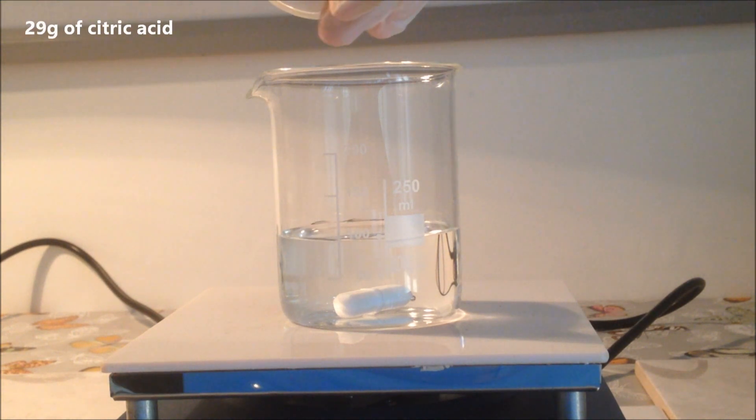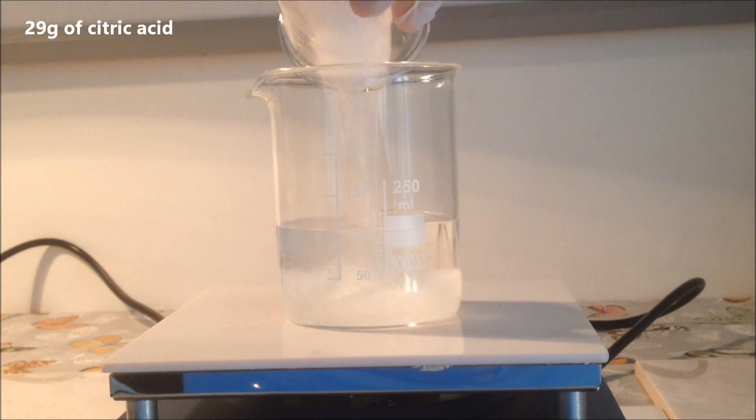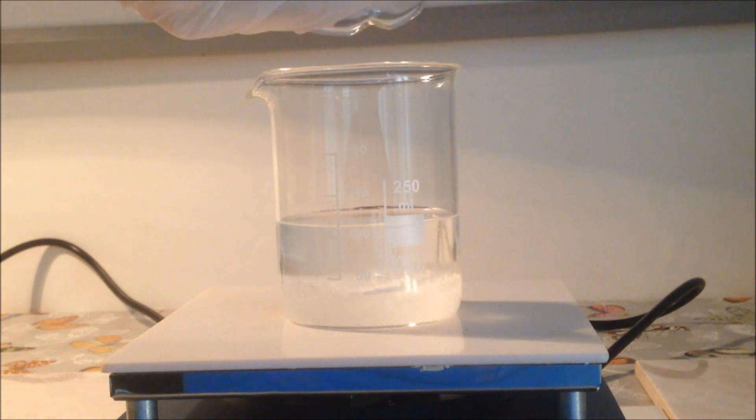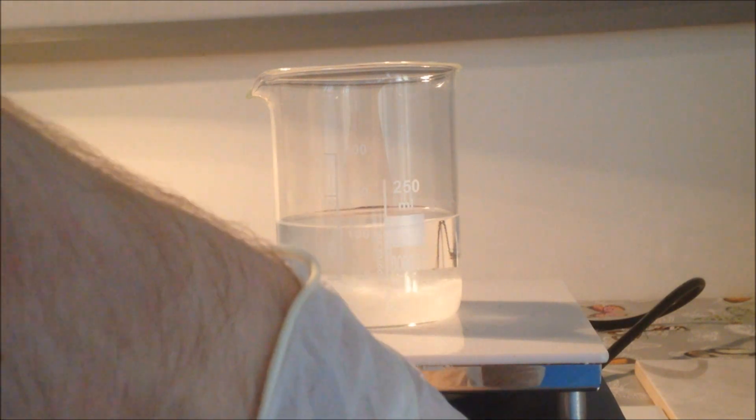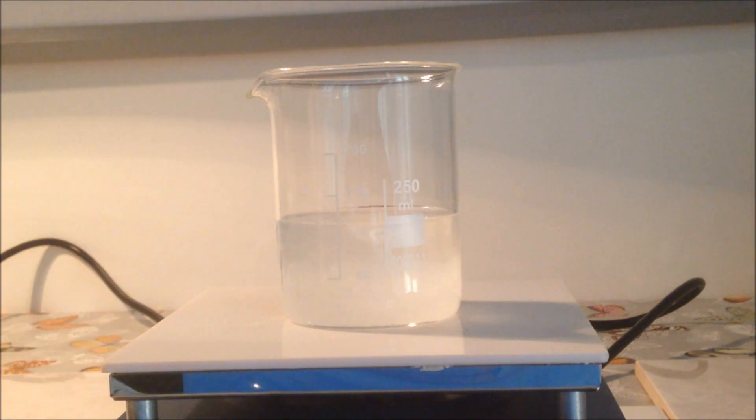I then added about 29g of citric acid, as this is the route I'm going by. I dumped that all in and turned on stirring to about medium to get that dissolved quickly before adding sodium hydrogen carbonate.